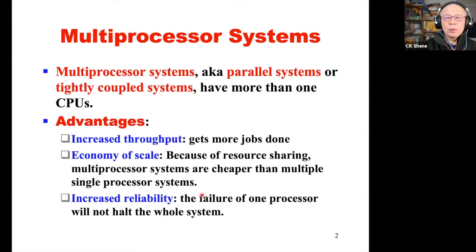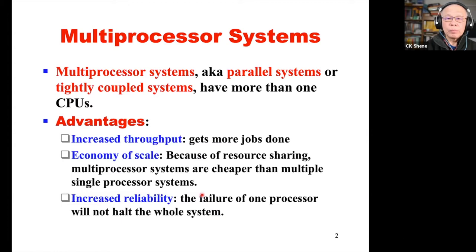So the first thing is multiprocessor systems. You will learn more in a parallel computing or computer architecture course, but here we only review what will be needed for this course. What is a multiprocessor system? Also referred to as a parallel system or tightly coupled system. Such a system has more than one CPU core. Why do we need a multiprocessor system? It has some obvious advantages.